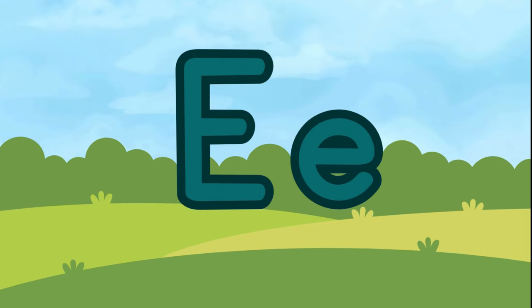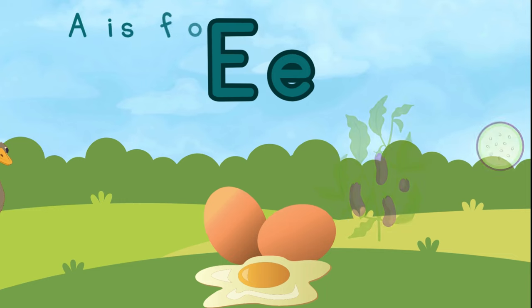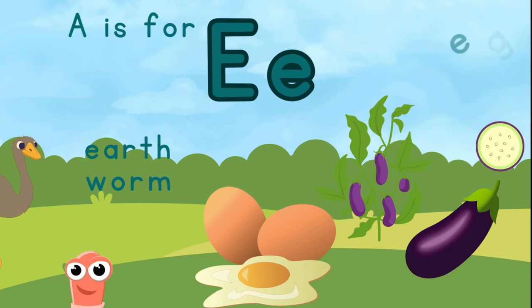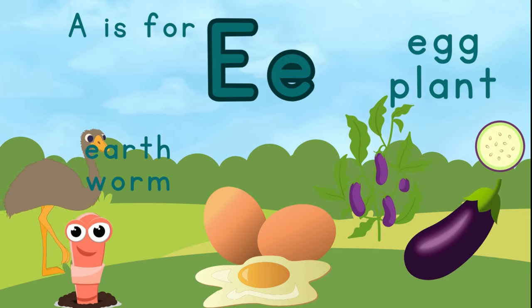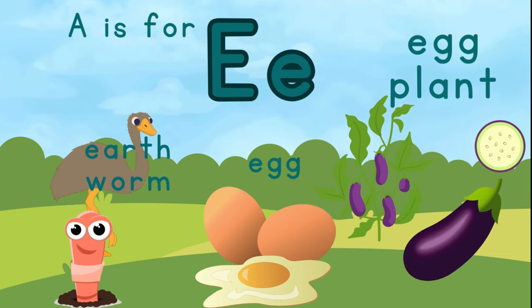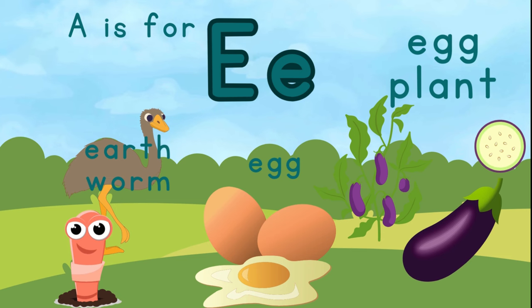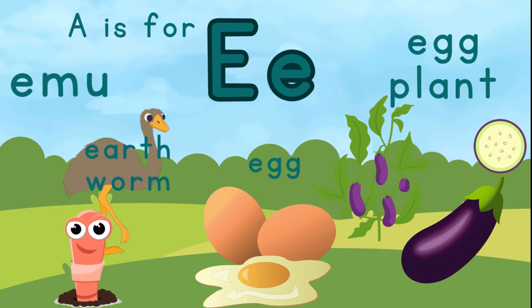This is the letter E. E is for earthworm. E is for eggplant. E is for egg. And E is for emu.